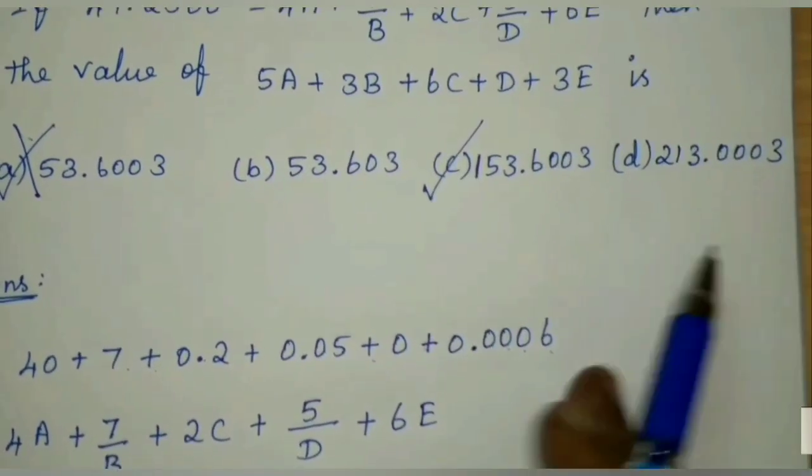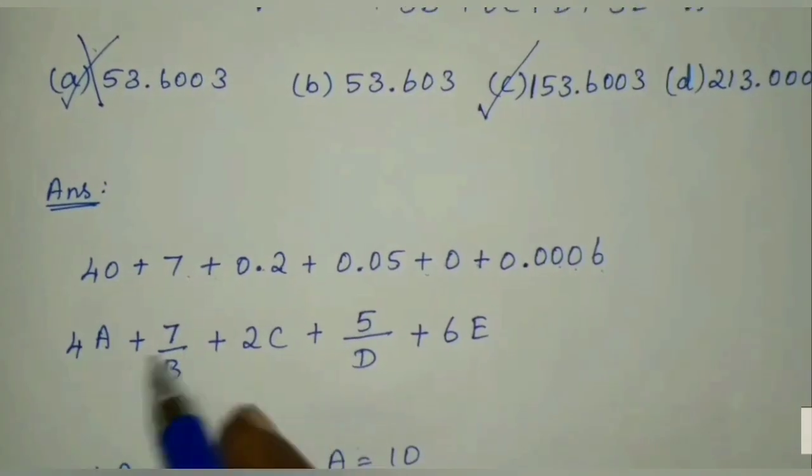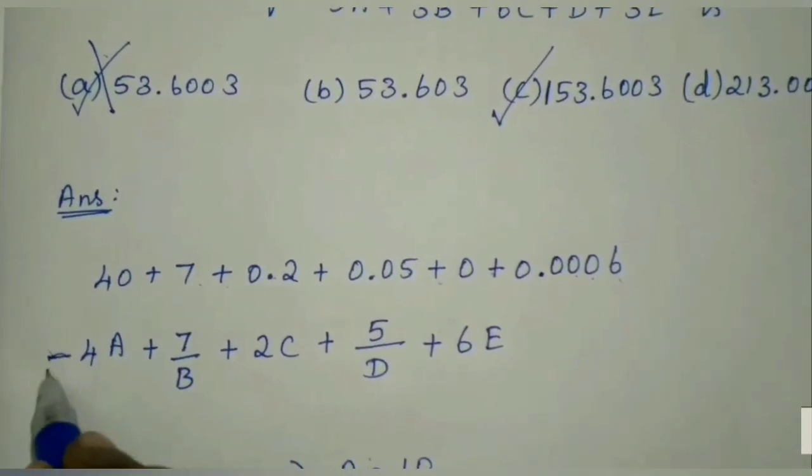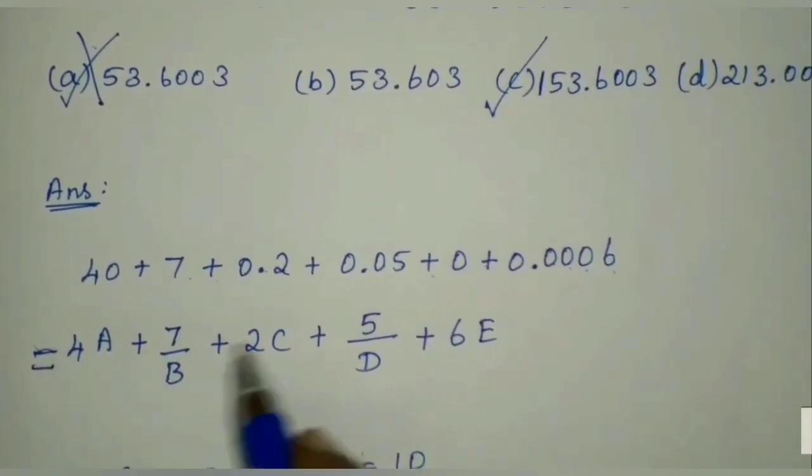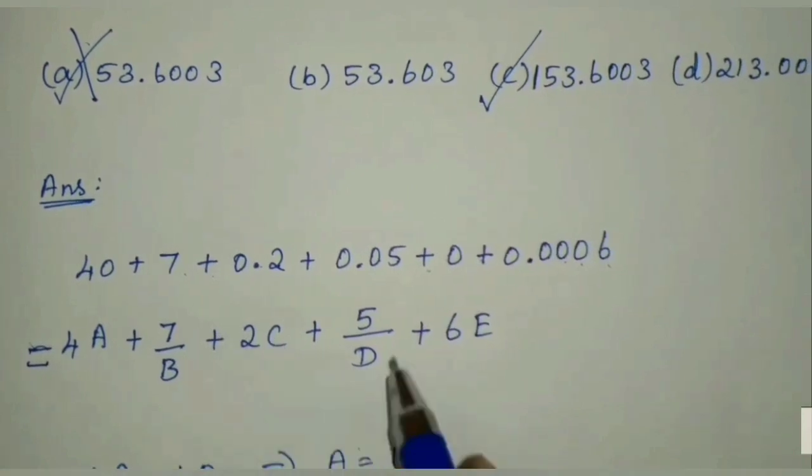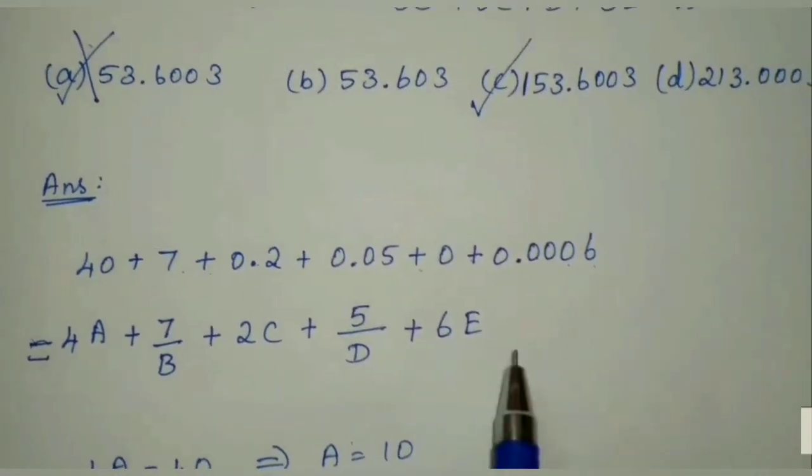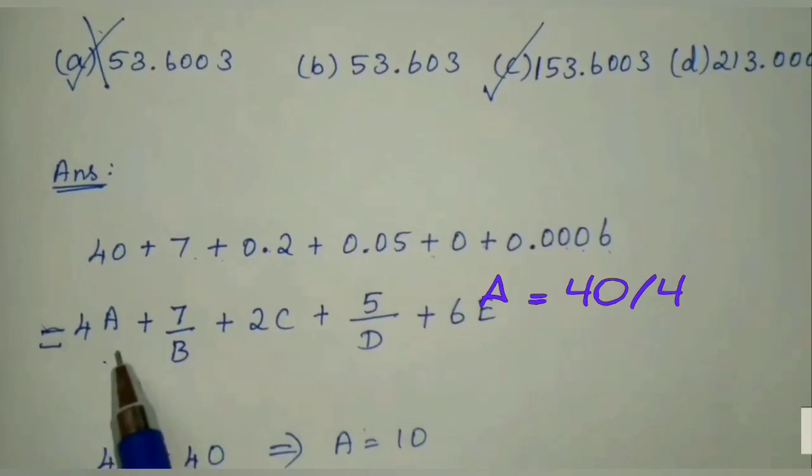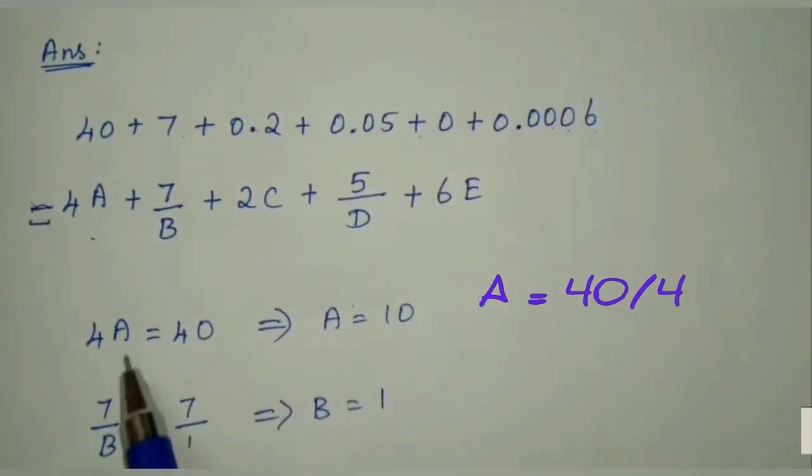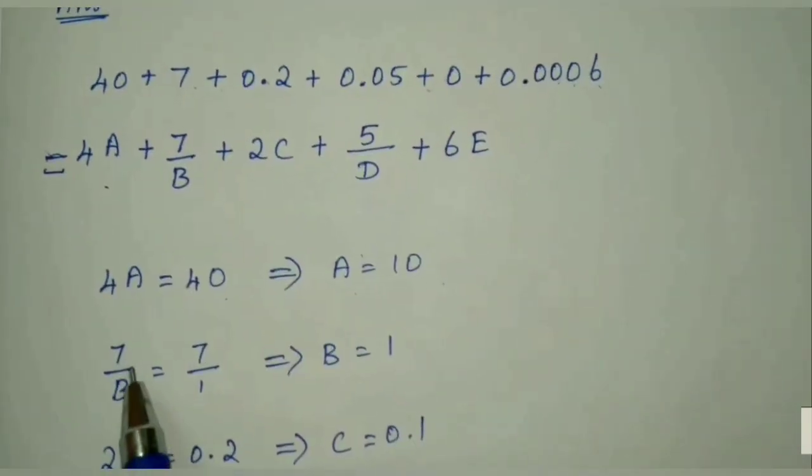So this equals 4A plus 7 by B plus 2C plus 5 by D plus 6E. So 40 is equal to 4A. So first value, 40 equals 4A. Then A equals 40 by 4, which is 10.